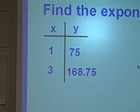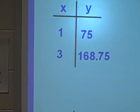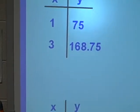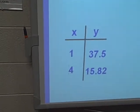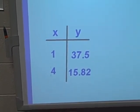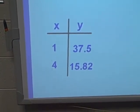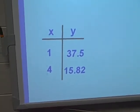You can see we've got two data points: 1, 75 and 3, 168.75. And for the second problem we have another exponential: 1, 37.5 and 4, 15.82.